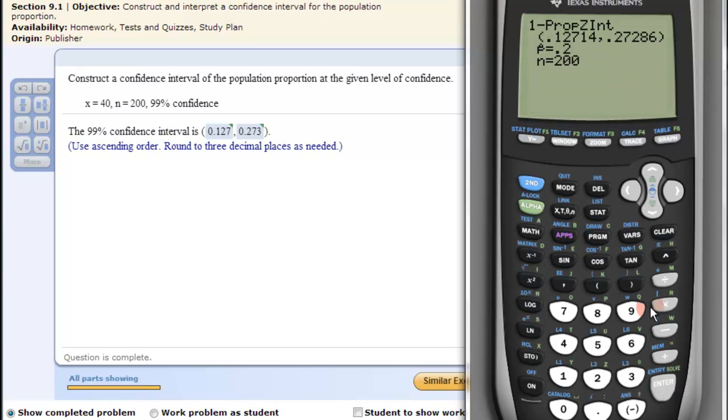Down, calculate, enter. And there is our confidence interval, same thing as the answer here. So it's very quick to do this on the TI. Goodbye. Thank you.